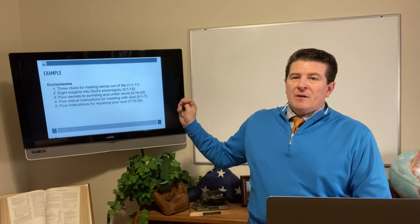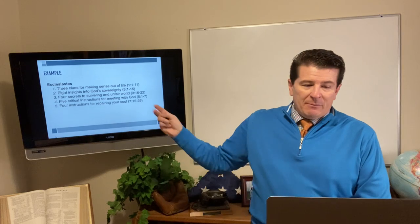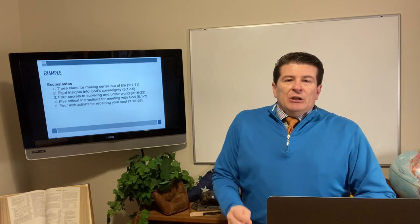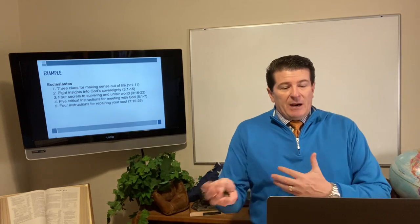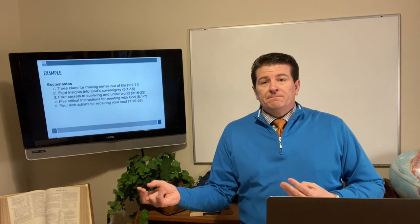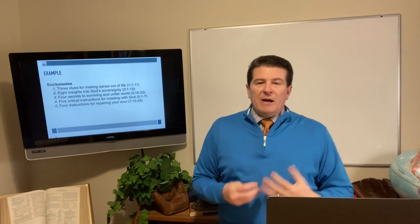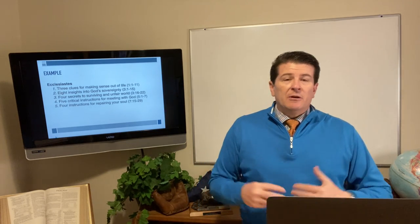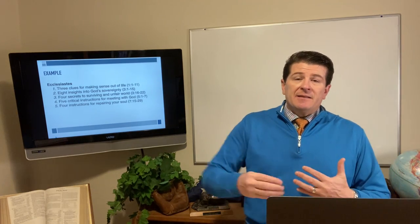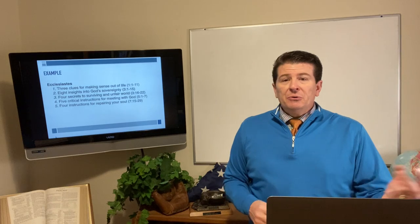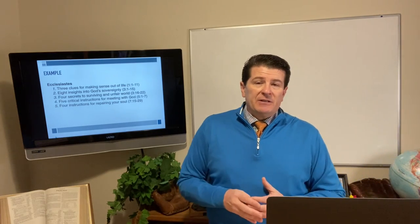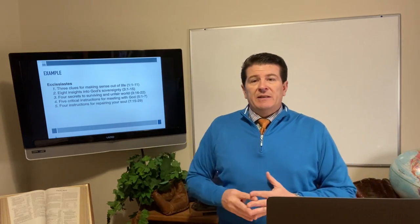In this example, we look at the book of Ecclesiastes in the Bible — the chapter and verses at the end. If I were going to introduce chapter one, verses one through eleven, I would say: three clues for making sense out of life are. You clearly understand what we're getting ready to talk about — how many clues, three, and clues of what, making sense out of life. The second example: eight insights into God's sovereignty. That's what chapter three, verses one through fifteen gives us.